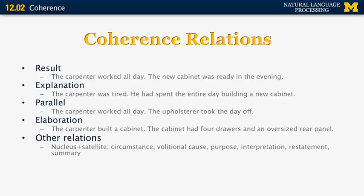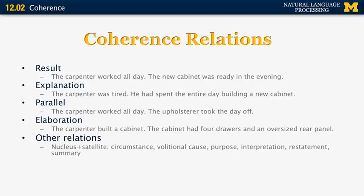Some RST relations have a nucleus and a satellite. Those include circumstance, volitional clause, purpose, interpretation, restatement, and summary. Others are multi-nuclear — in other words, have more than one nucleus. Those are sequence, contrast, and joint.